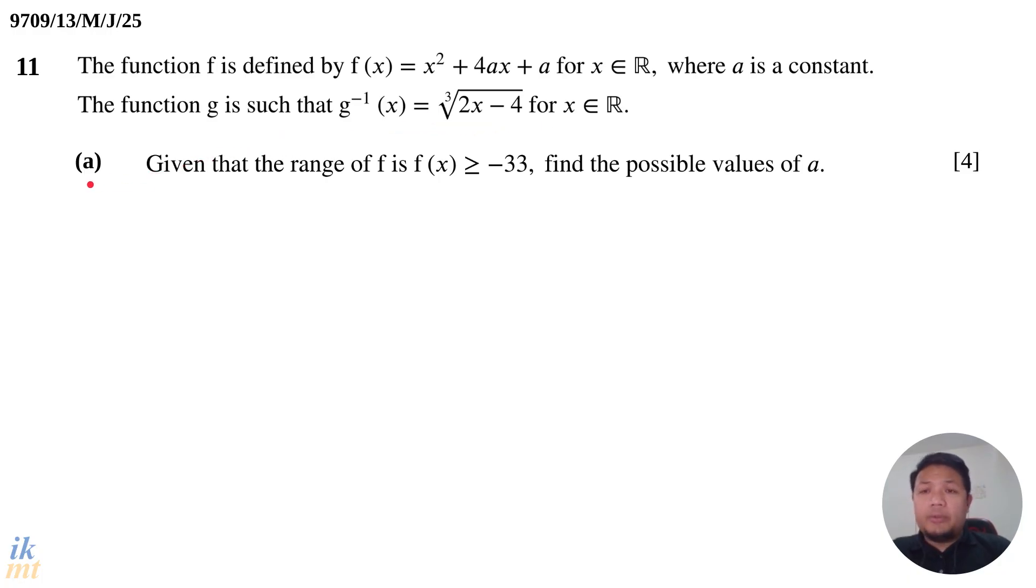So part A of the question, given that the range of f is f(x) larger than or equal to negative 33, find the possible values of a. Now, one of the things that you have to notice very quickly is that the function f(x) has only one unknown. x is a variable, a is a constant, and there's only one unknown constant, which is a. And that means if you know one information about f(x), you can then set up an equation using f(x) so that you can find this value of this unknown, the value of a.